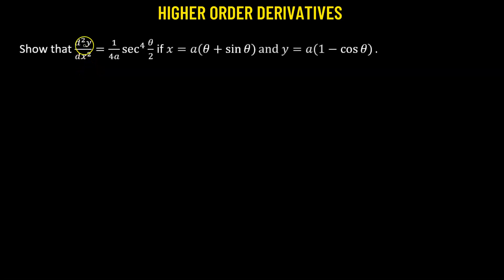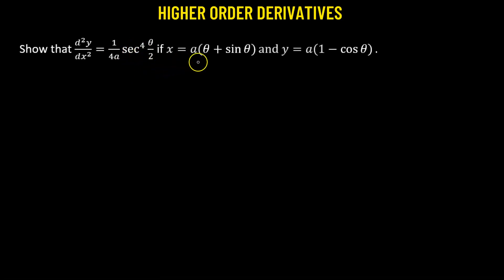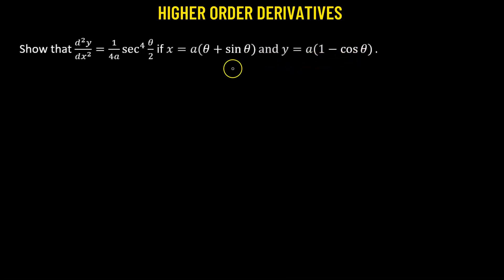In this problem, we have to show that the second derivative of y with respect to x is given by a particular expression, where x equals a times (θ + sinθ) and y equals a times (1 − cosθ). These are given in parametric form.